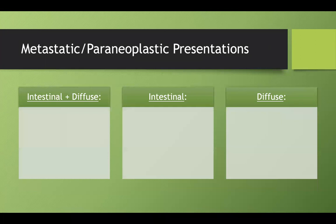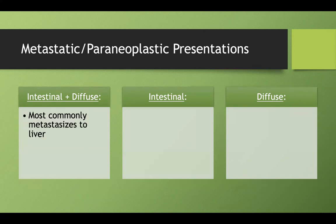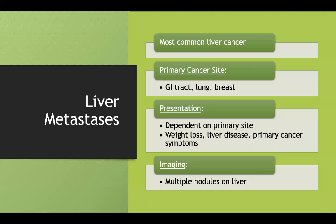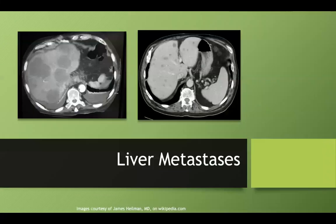In terms of how they test these, you need to know some paraneoplastic presentations. Either subtype of gastric adenocarcinoma can present with metastases to the liver. The most common primary site of liver metastases is the GI tract. So if you see spots in the liver on imaging, think of a GI tract tumor — gastric adenocarcinoma, colon cancer, or pancreatic adenocarcinoma — and use context to identify the primary site.